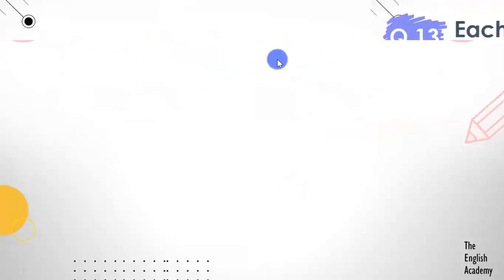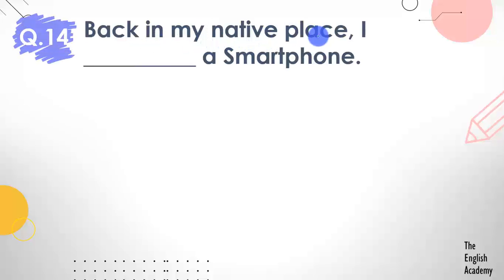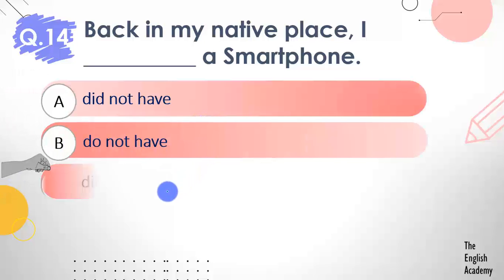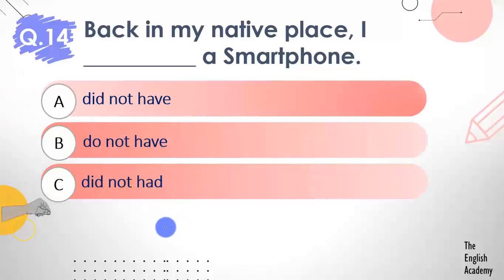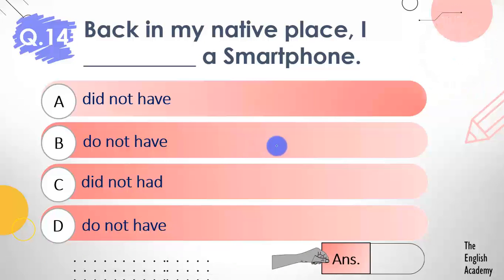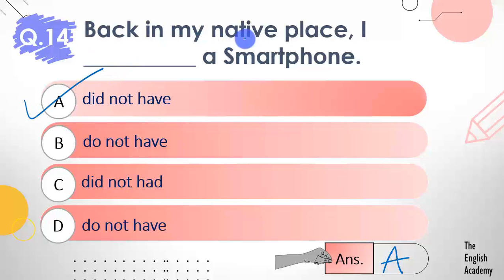Question number 14: Back in my native place, I ___ a smartphone. Options: A) did not have, B) do not have, C) did not had, D) do not have. This is a negative sentence about not having a mobile phone when living in one's native place. The answer is option A — I did not have. Back in my native place, I did not have a smartphone.